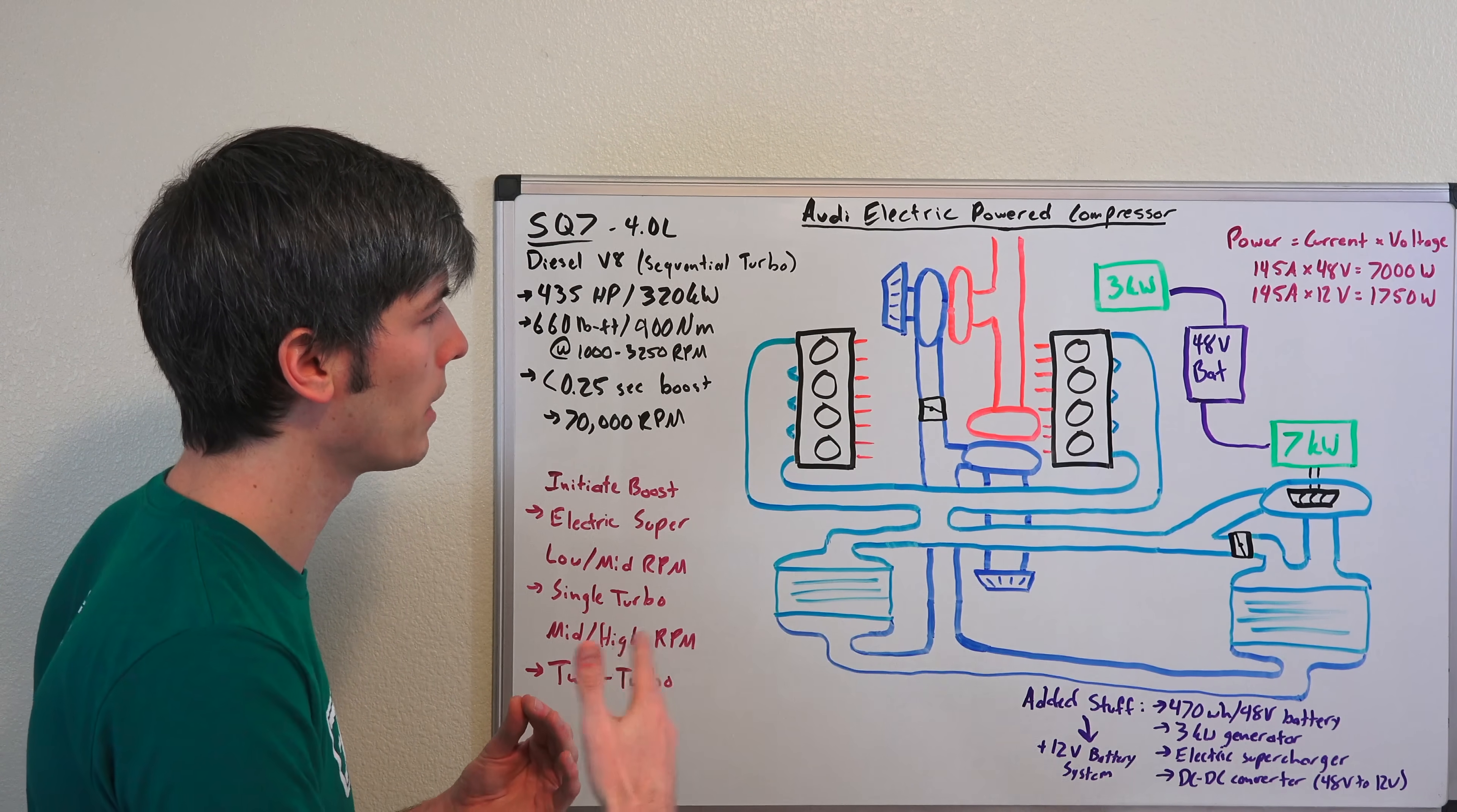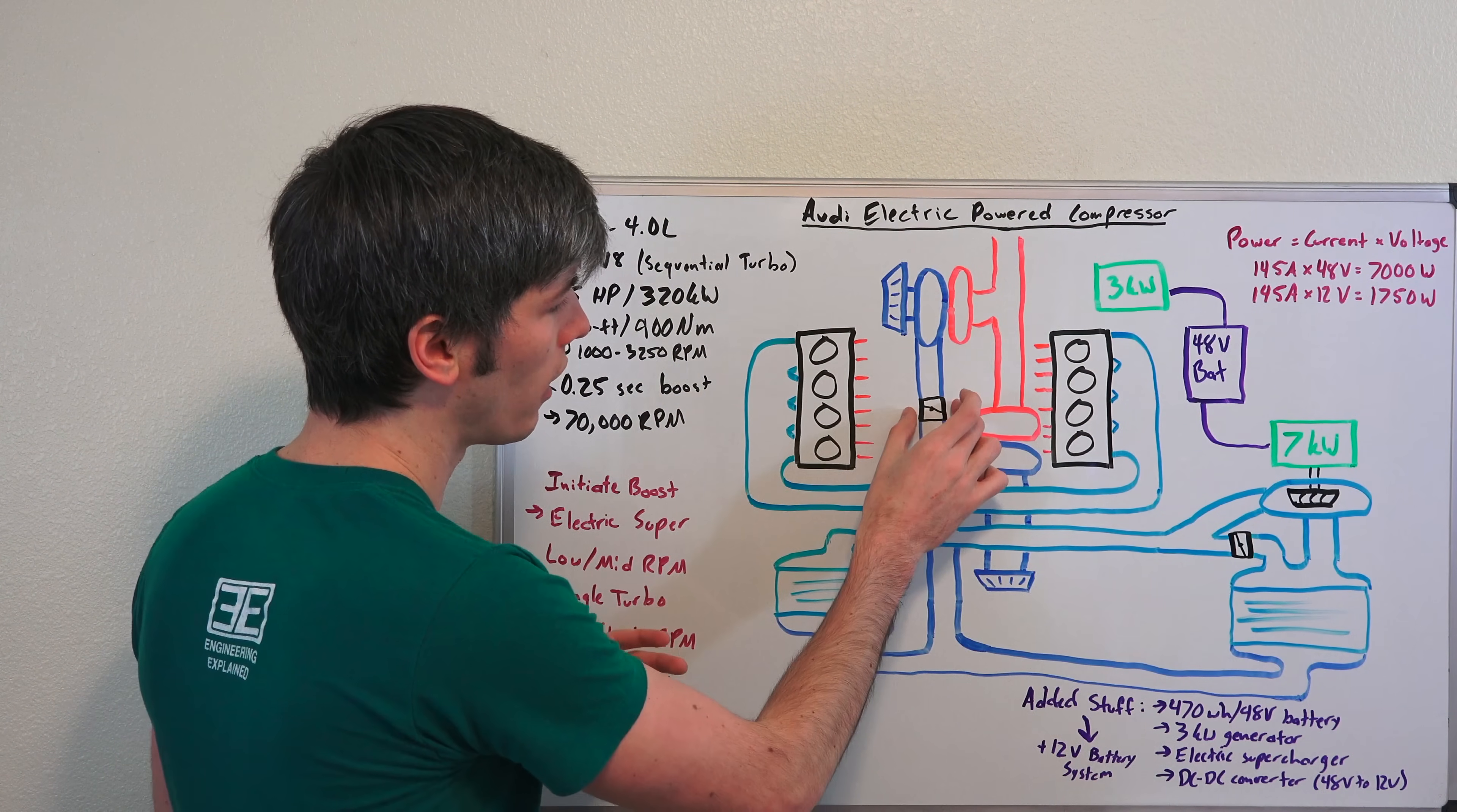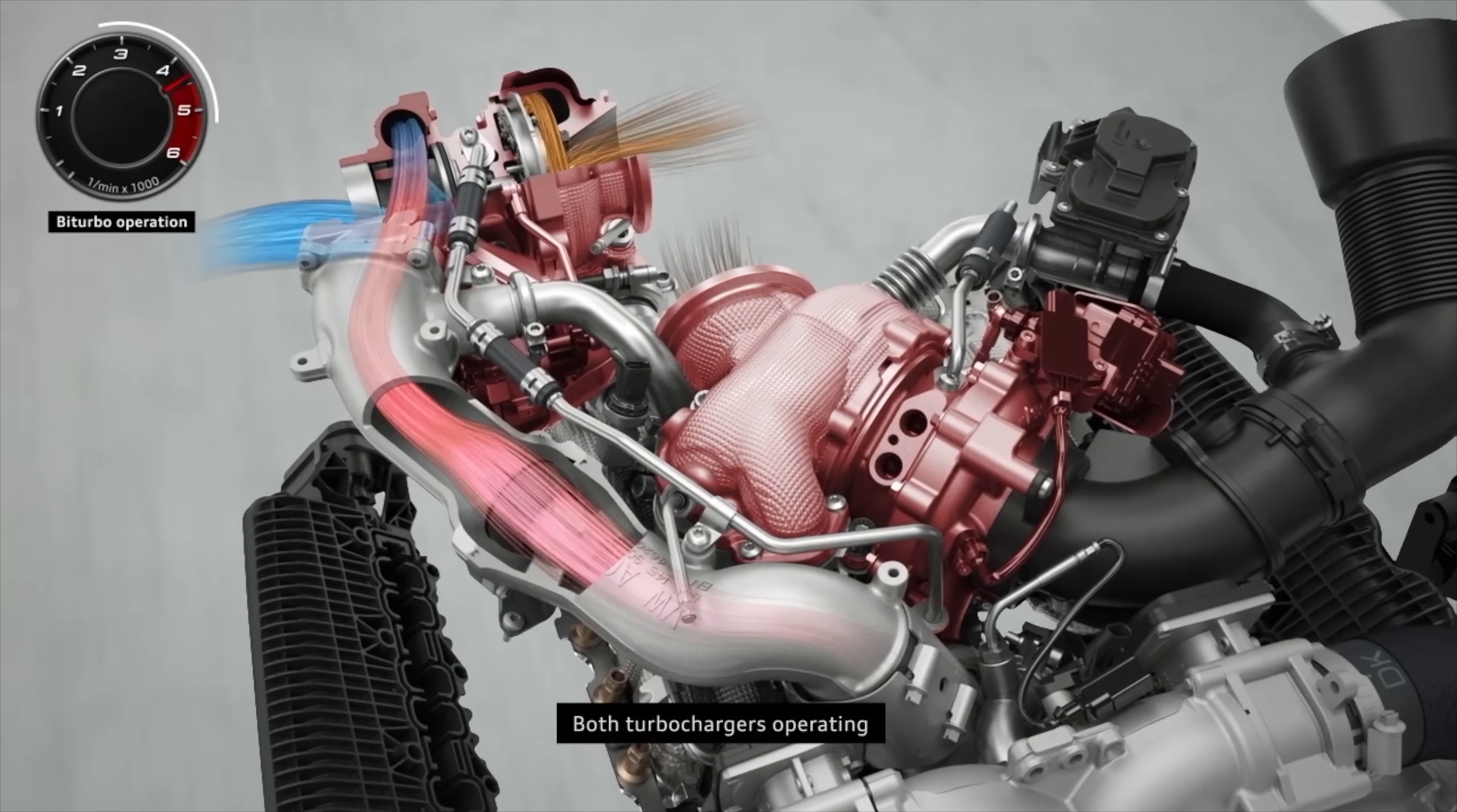And then as you start to get to that mid-range RPM into the higher RPM, and you're still asking for full power, they've actually split now where they'll power both turbochargers. In this case, you'll have air coming through both of them, this valve right here will be open, so you're now pulling in air through both turbochargers, you're powering both turbochargers, and you'll have sufficient boost for that mid to high RPM range while operating under full throttle.